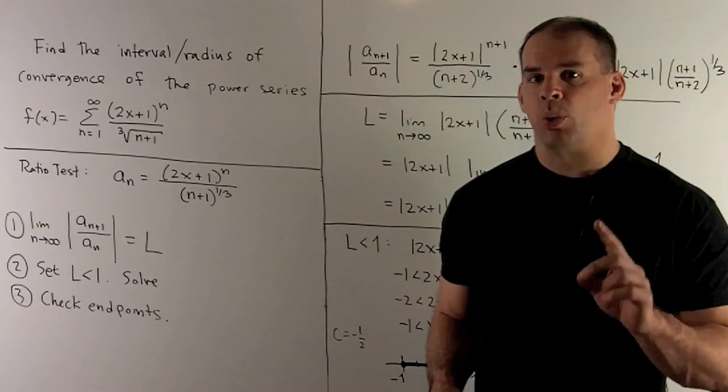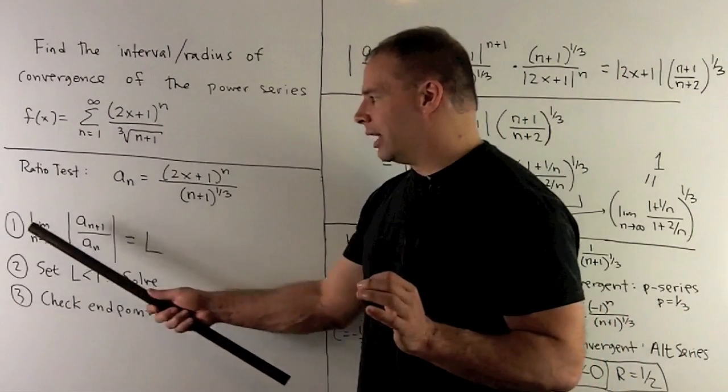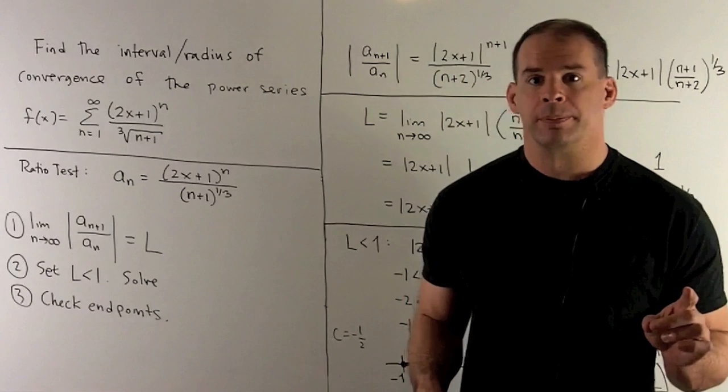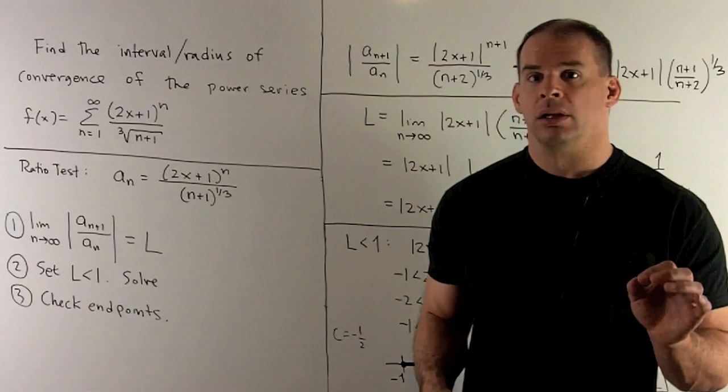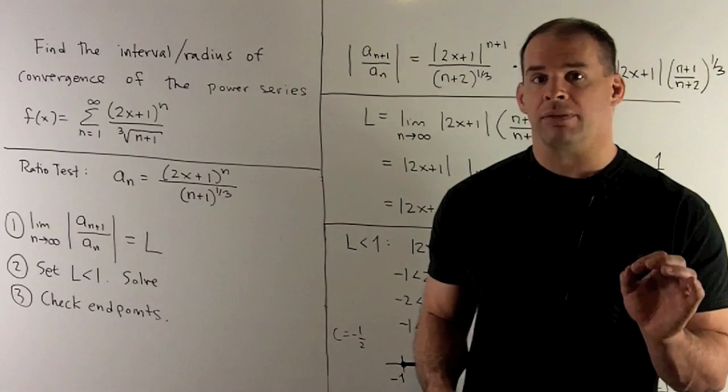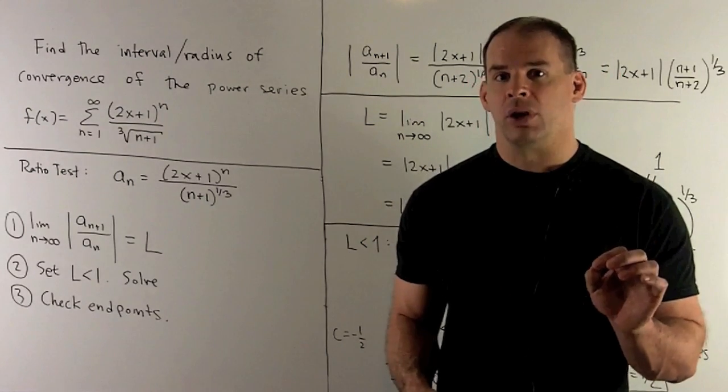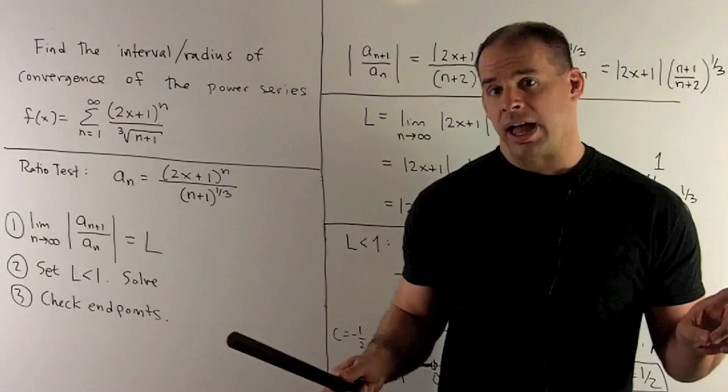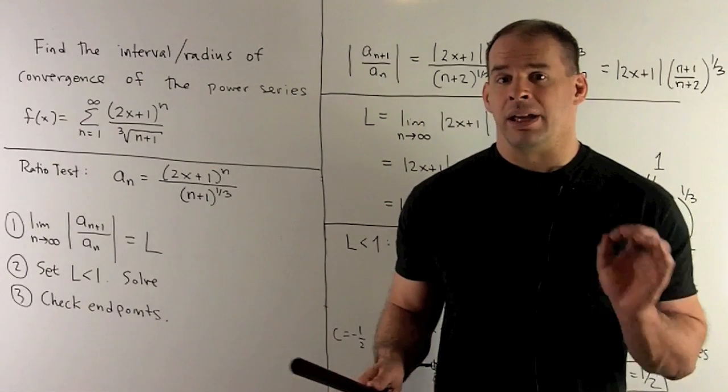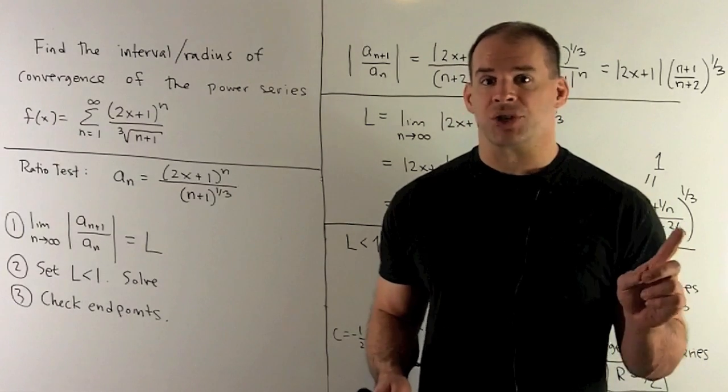Then I'm going to take |a_(n+1)/a_n| and take the limit as n goes to infinity. We'll call that limit L. Then we're going to set L less than 1 and solve. What can come out is either a point, a finite interval, or the entire real line. If we have a finite interval, we're then going to check the endpoints to get the complete answer.